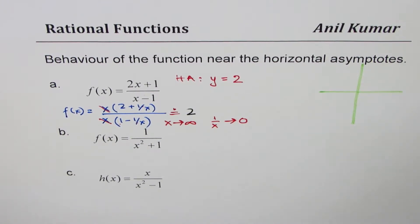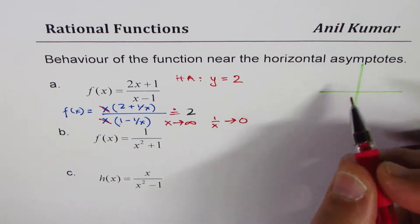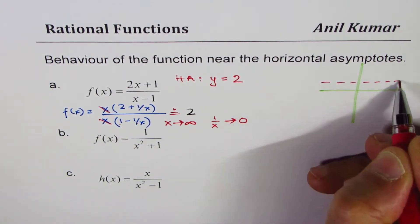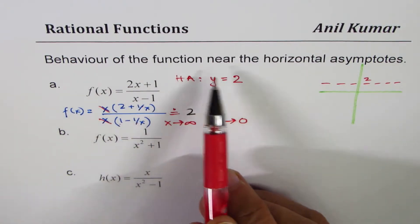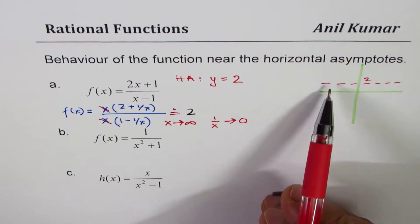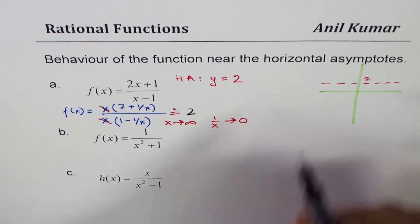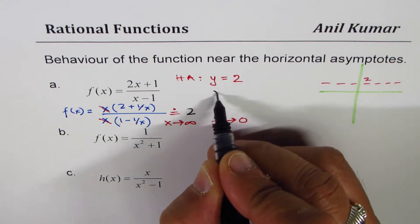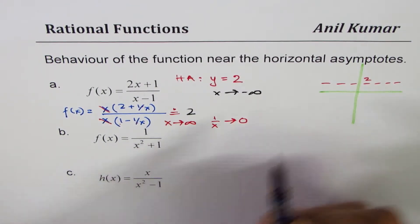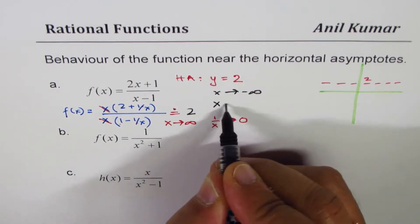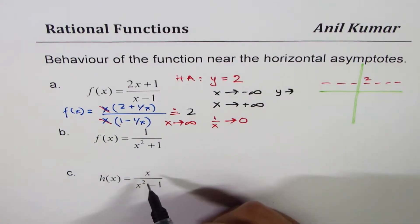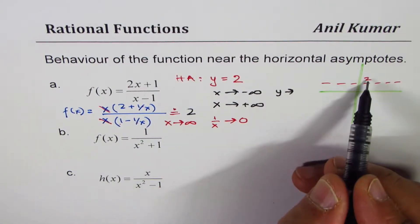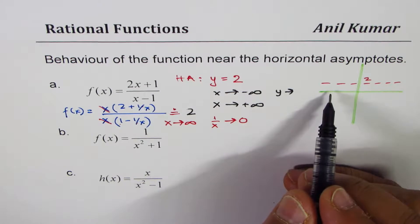So concept is clear. y equals to 2 is the horizontal asymptote. Let's sketch it here — this is our y equals to 2 horizontal asymptote. Now when we say behavior of the function near the horizontal asymptote, it means what happens when x is approaching negative infinity and what happens when x is approaching positive infinity. Is it more than 2 or less than 2? That is what we are interested in.